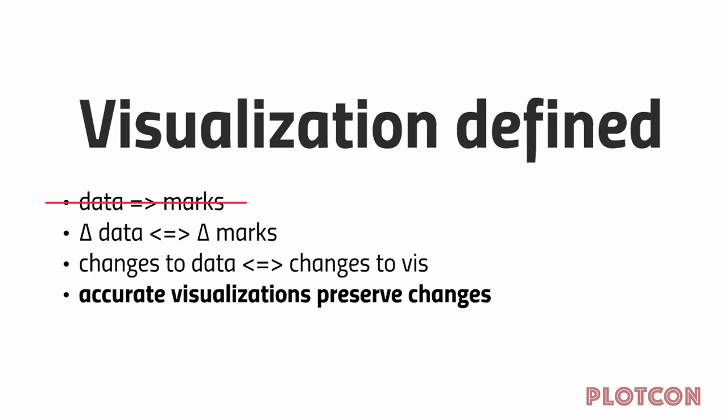What is the definition of visualization? The old definition is that it is a function which maps data into marks on a screen. The new definition is that a visualization is a functor — F-U-N-C-T-O-R — which maps changes in the data to changes in the visualization. That is the key point. A visualization which is accurate is isomorphic to the data. Now that we've done the math, we can have a computer do this work for us.